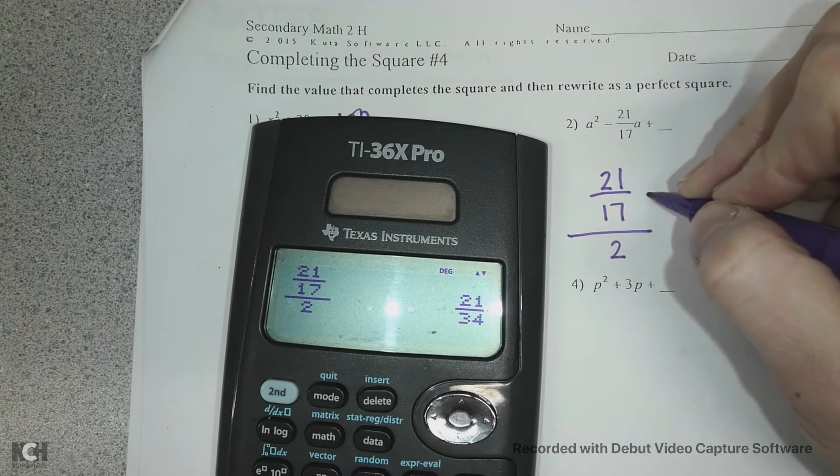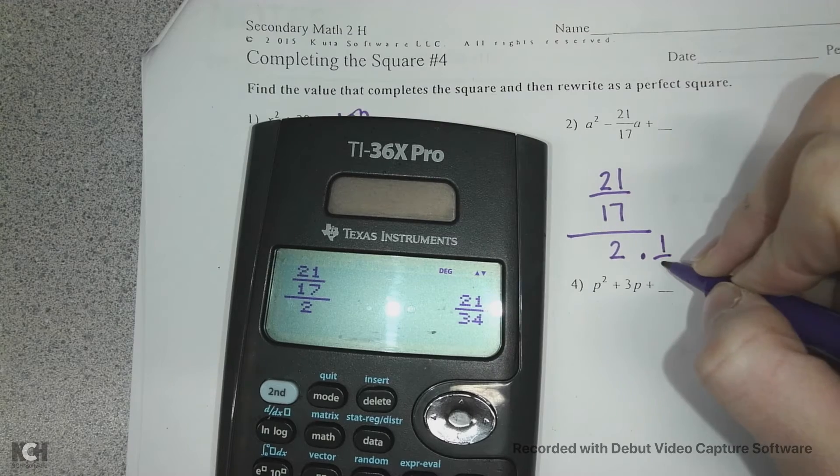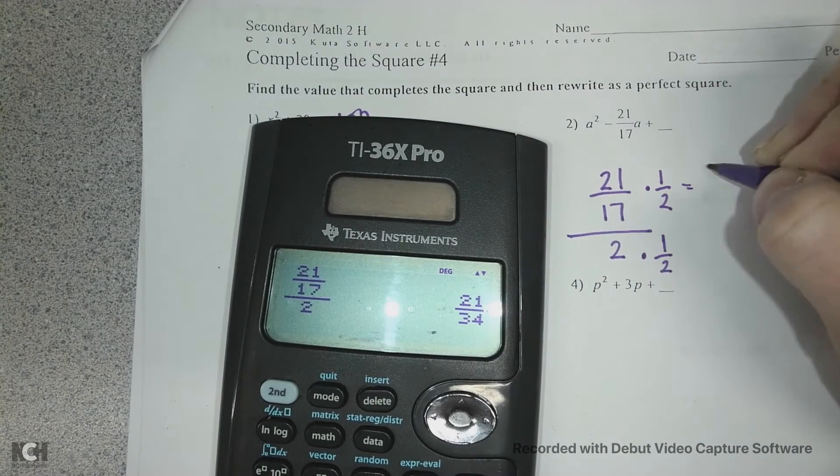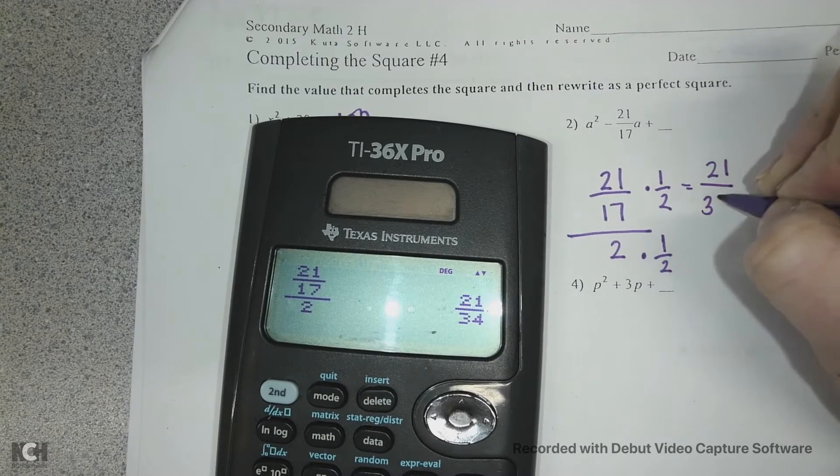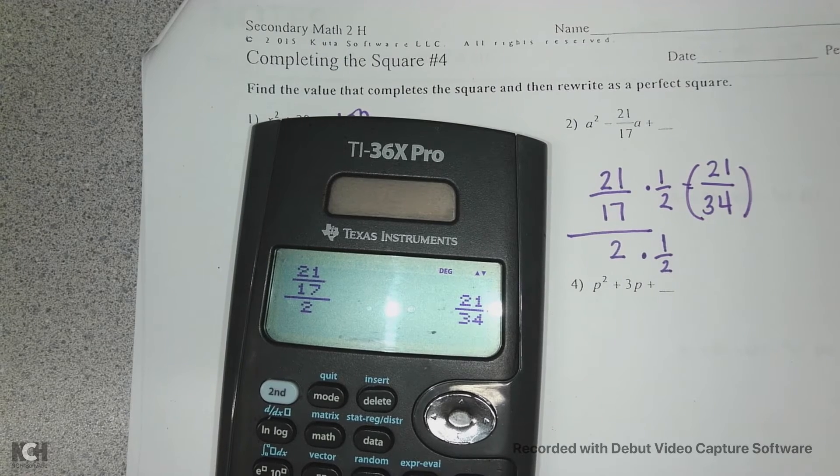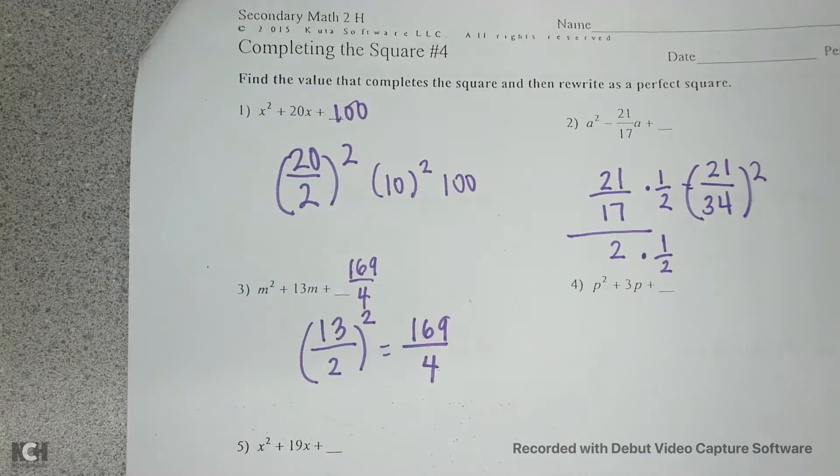Anyways, if we do this, we're technically multiplying by the reciprocal, so you'd technically be multiplying the top and the bottom by one-half. 21 times 1 is 21, and 17 times 2 is 34, which is what the calculator did. And then we have to square this, so remember just square the top and square the bottom.